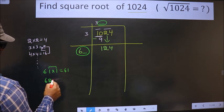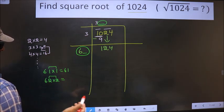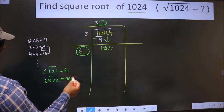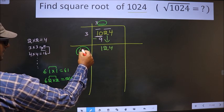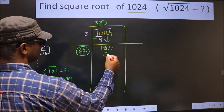If we take 2, these two numbers should be same. 2 into 2, 4; 2 into 6, 12. We got exact 124. So here we take 2 and here also 2 and here 124.